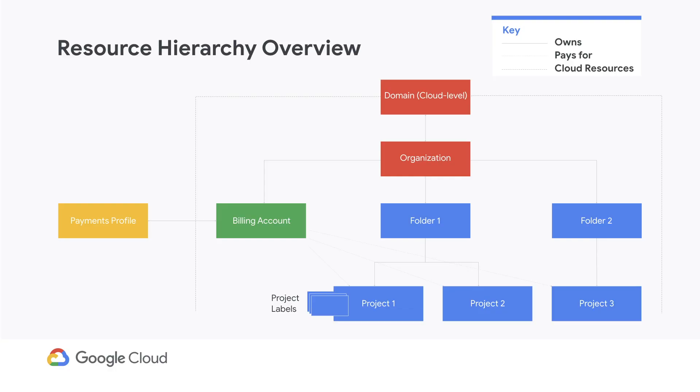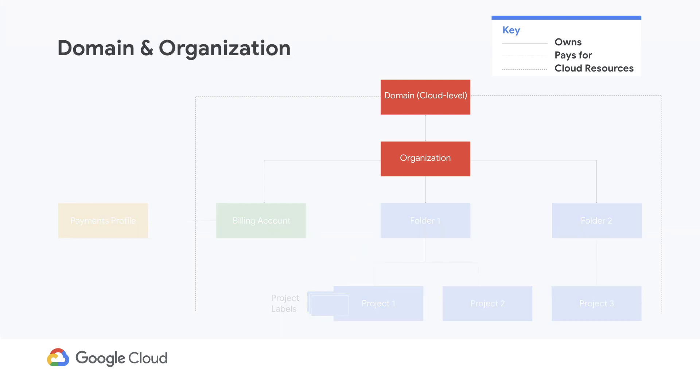As you plan and set up your resource hierarchy, make sure to consider the requirements for your organization. You can always change the structure in the GCP console, so start with the simplest structure that meets your needs and make changes as required. Here's a diagram of what the different parts of the resource hierarchy look like. Let's start from the top and work our way down. Everything you'll manage in Google Cloud is under your domain and organization — they're kind of like an umbrella.